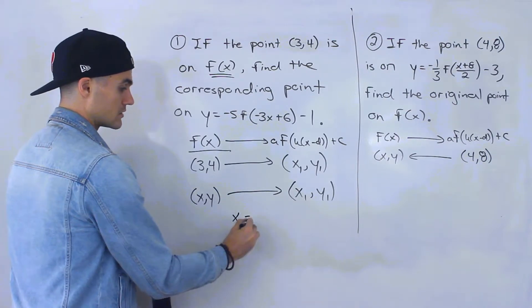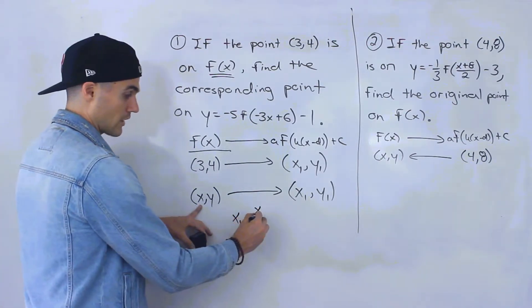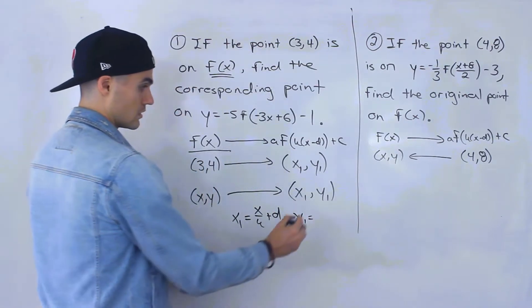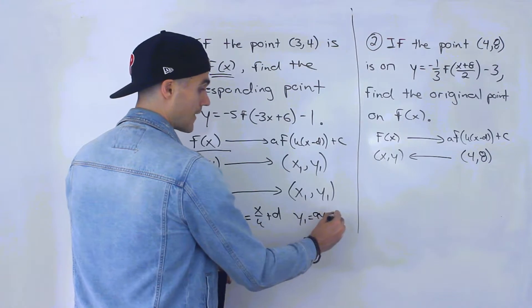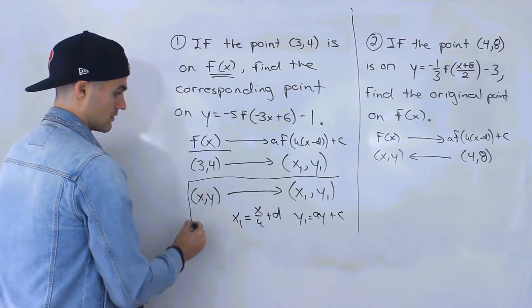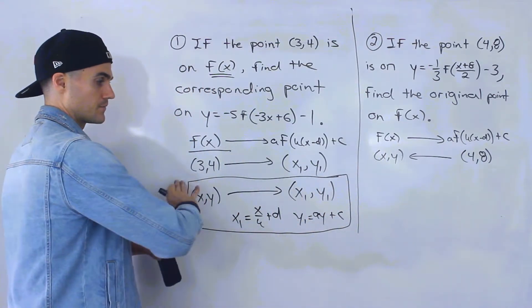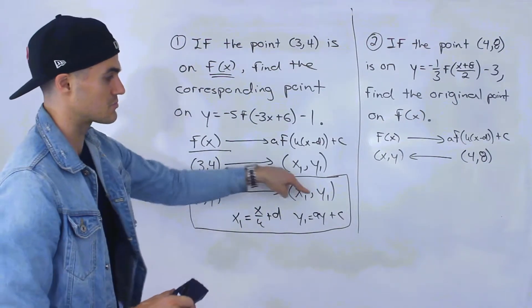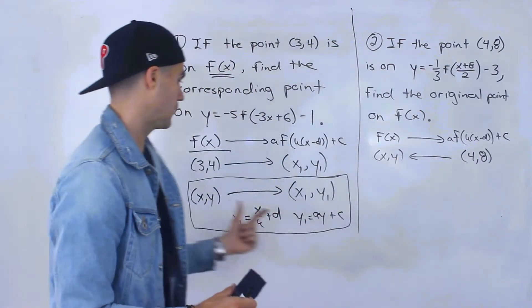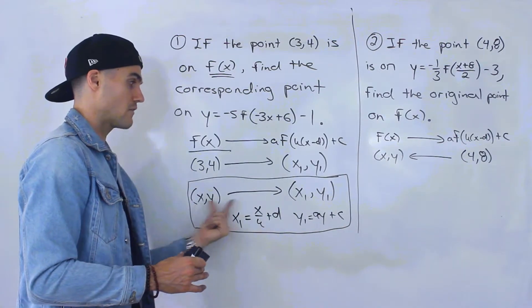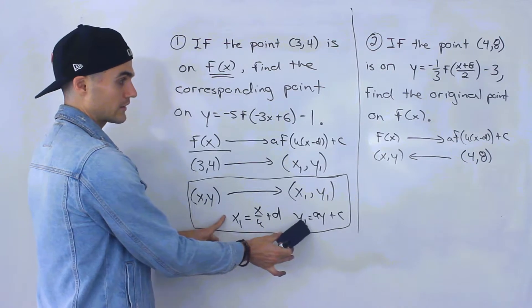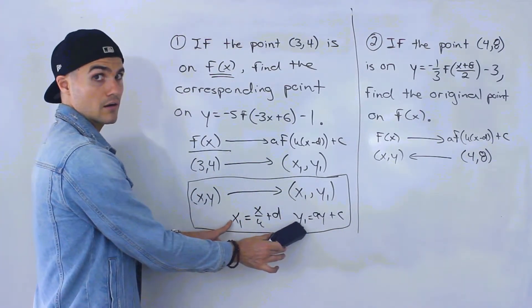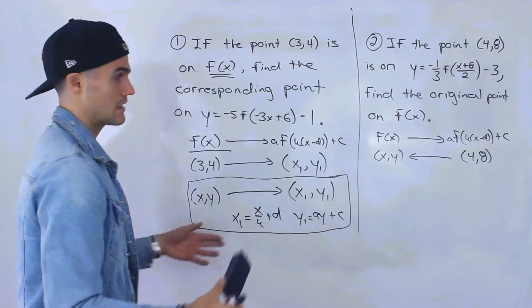Remember the formula to get the transformed x value: we take the original x value, divide by k, then add d. And to get the transformed y value: we take the original y value, multiply by a, then add c. I'm spelling out this notation because for the backwards problem we'll be plugging in for x₁ and y₁ and solving for x and y — having these as equations will make things a lot smoother.